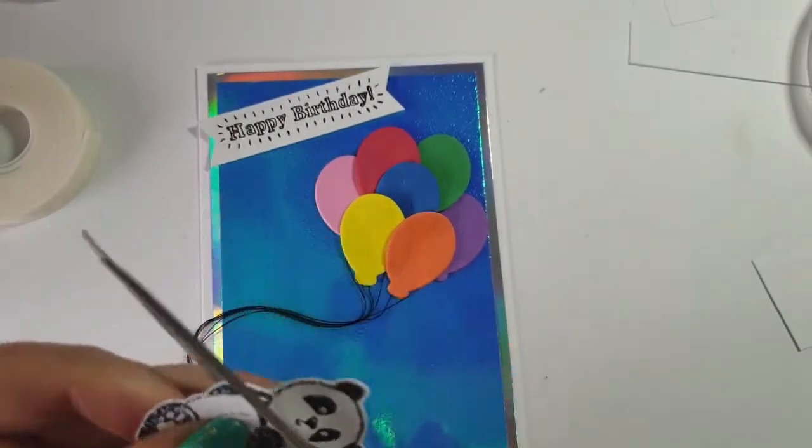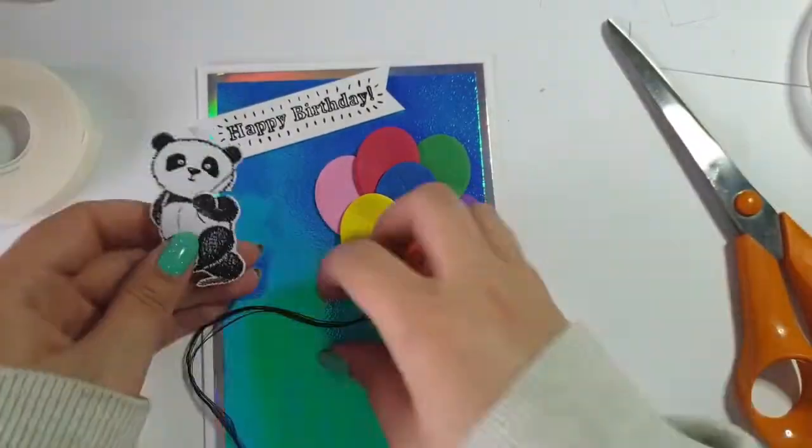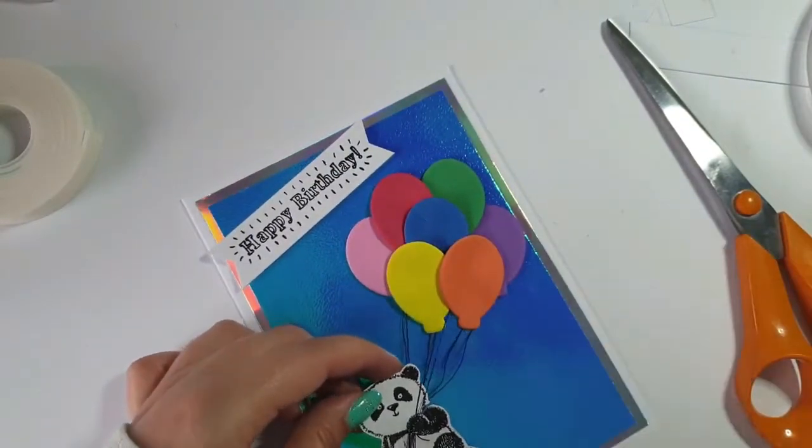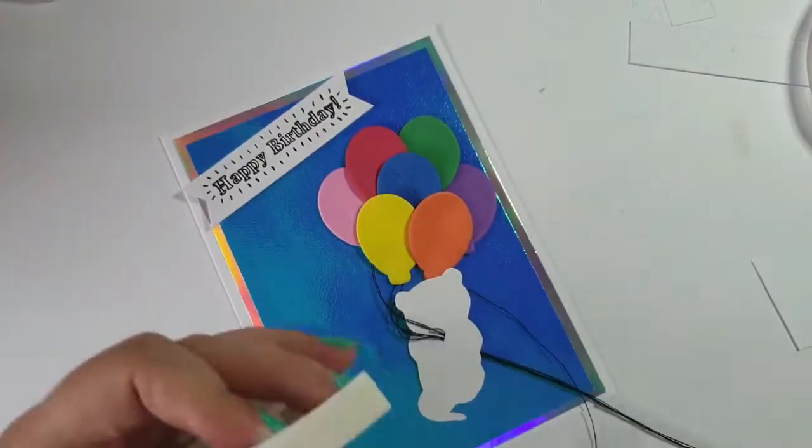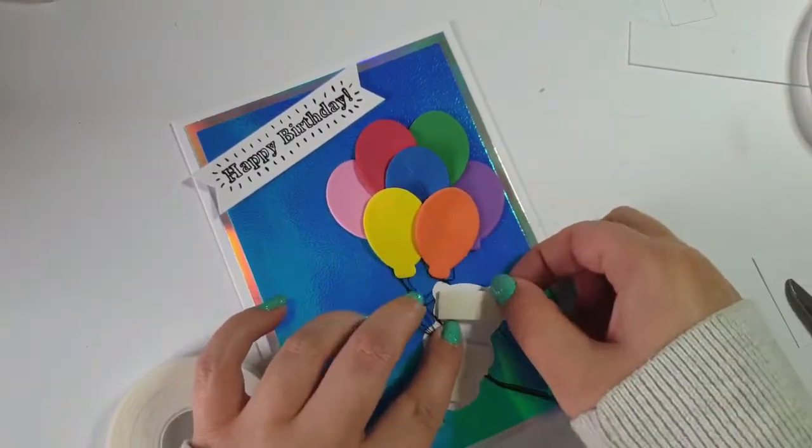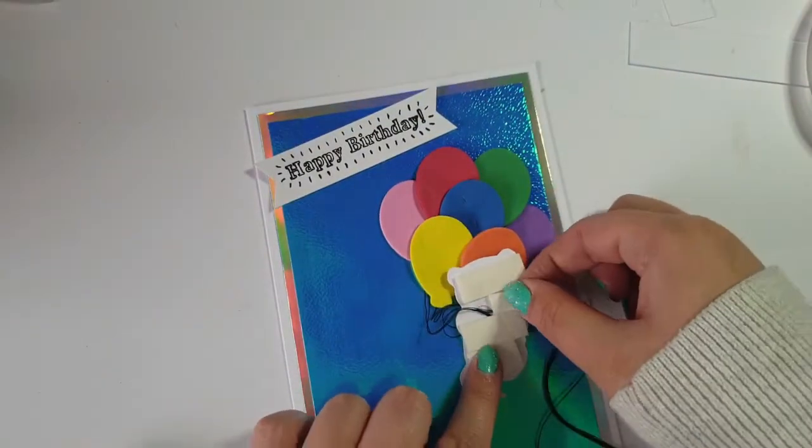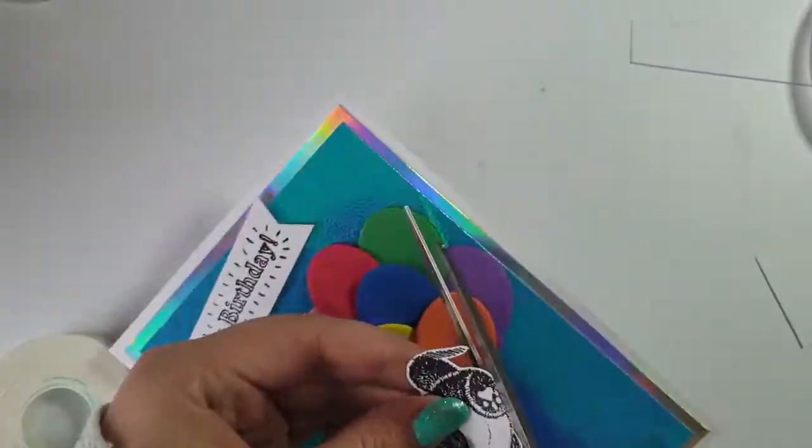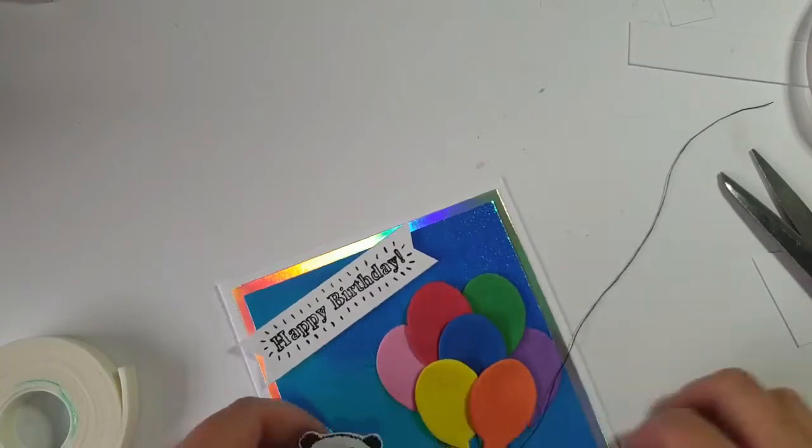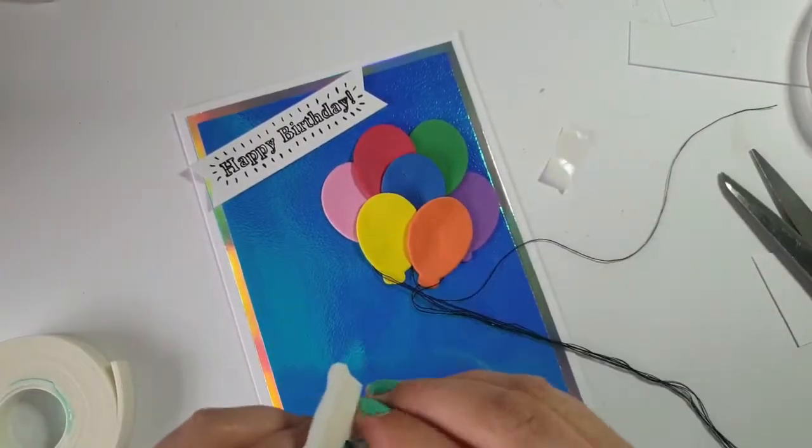What I did is I kind of cut around its hand and made like a little bit of a slit there and then fed the thread through. Then I realized they didn't go in the right order. The blue balloon, the one in the middle, needed to be on top of the thread, so I've just pulled that one out separately.